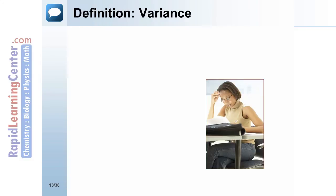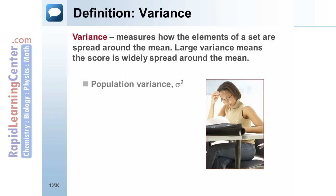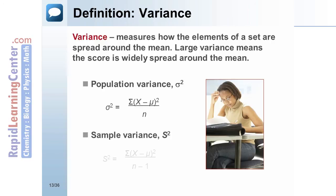Definition: Variance. The variance measures how the elements of a set are spread around the mean. Population variance is designated by sigma squared and is the summation of x minus the mean, quantity squared, over n. Sample variance is designated by s squared and is the summation of x minus the mean, quantity squared, over n minus 1.